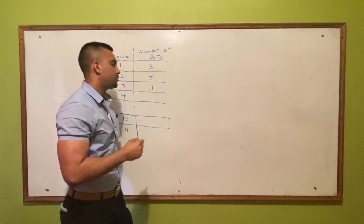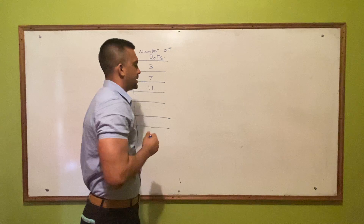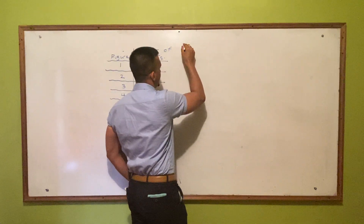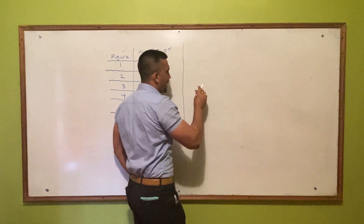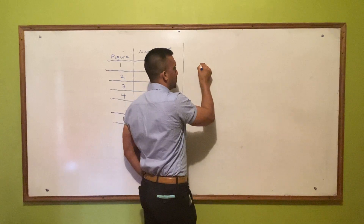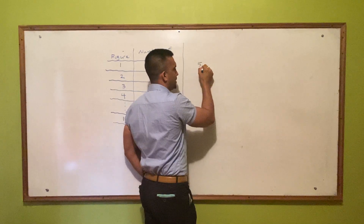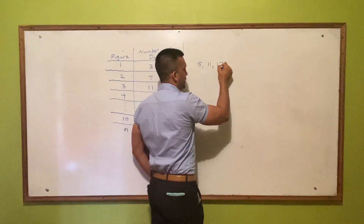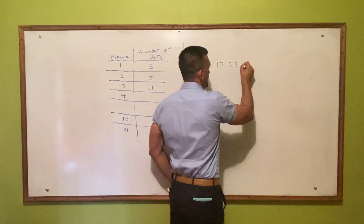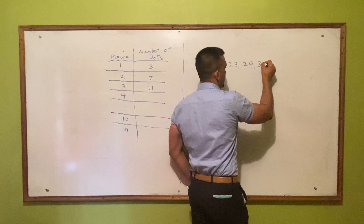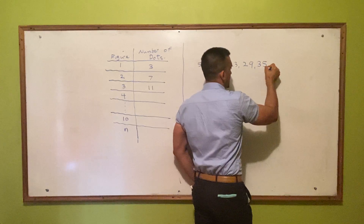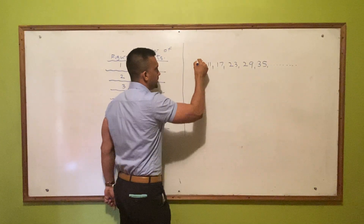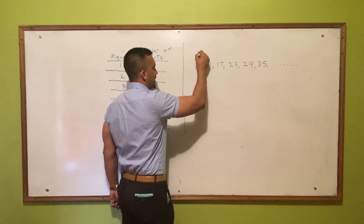Now let's look at how we approach this question. Let's stray from this question a bit. Any time we have sequences, let's say we have a sequence like this: 5, 11, 17, 23, 29, 35, and so forth. The first term of this sequence is 5.